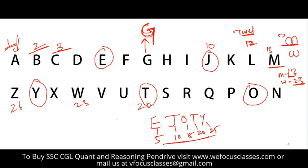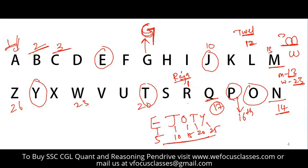For N, remember November 14 — Children's Day — so N is 14. Q is for Queen, and Queen is always 17. For P, if you're from South India, P is the 16th letter — 'Padaharu' in South India. R is Raja — Queen's husband must be one year older than Queen, so R is 18. U is 21, and V is for Victory — politicians show two fingers — so V is 22.